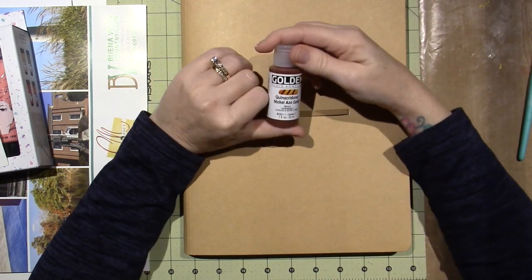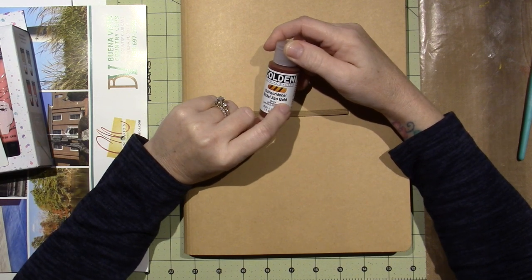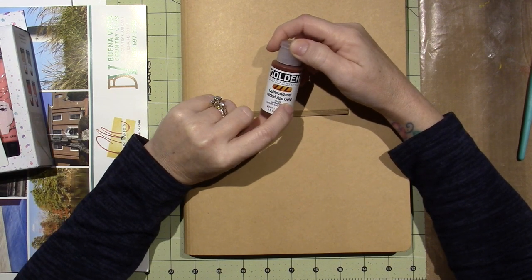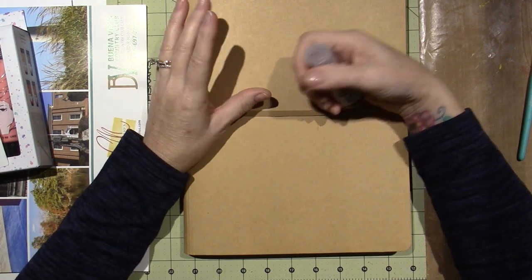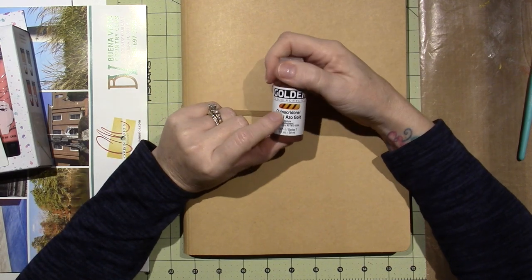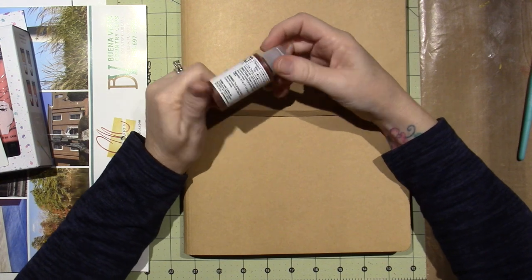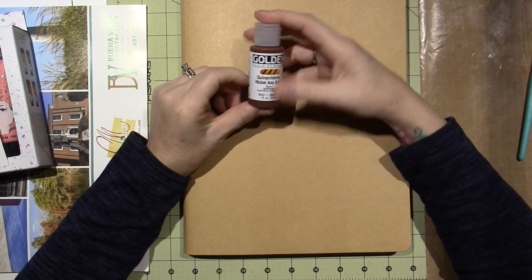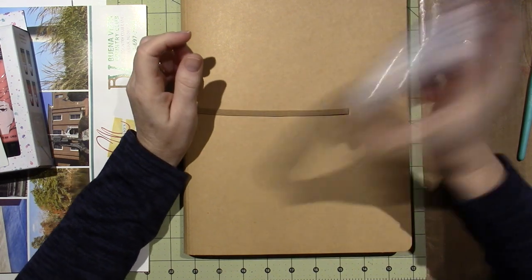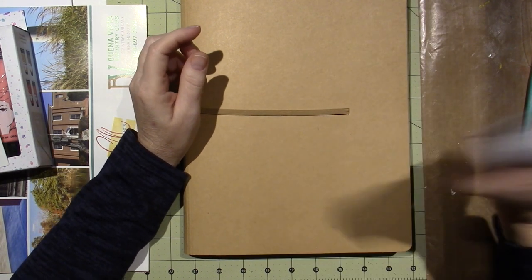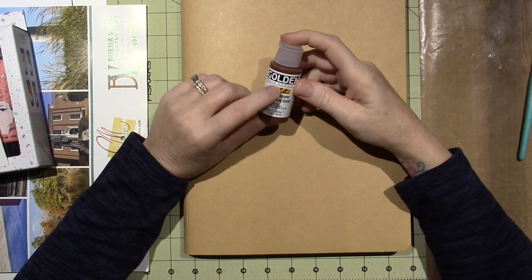I also ordered this Golden Fluid Acrylics. This is the Quinacridone Nickelazogold. And I don't know much about these Quinacridone colors. I'm not sure what that indicates when something is called Quinacridone. So I need to Google it and find out and look into that a little bit more, but look how tiny. This is only one fluid ounce of paint. I want to say this was five bucks at least for the fluid acrylics.